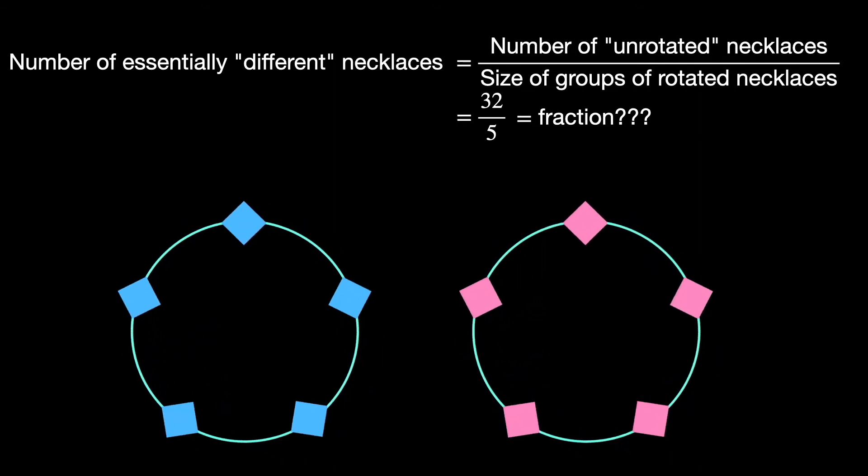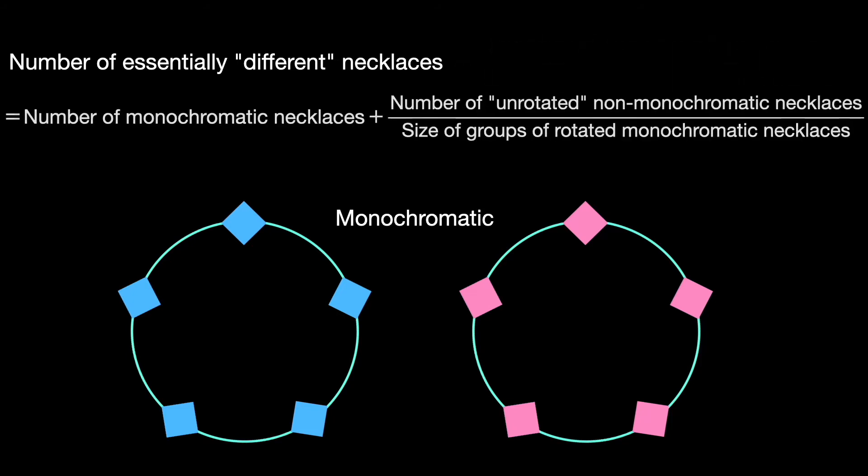Oh yes, of course, the necklaces with all beads of the same color are in their own group altogether. We call such necklaces monochromatic and there are two of these. The remaining thirty necklaces split into six groups of five equivalent necklaces.